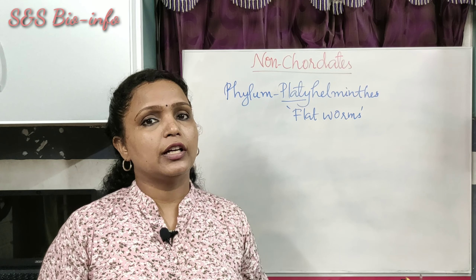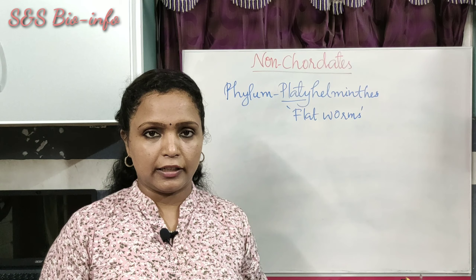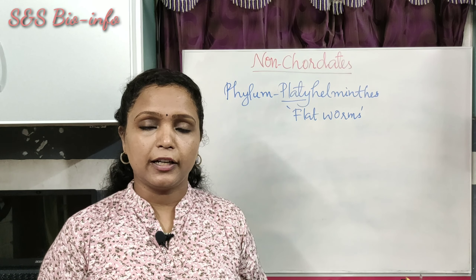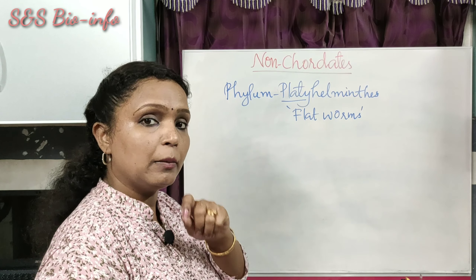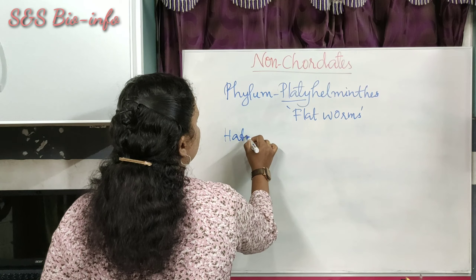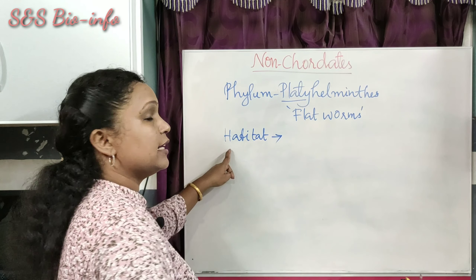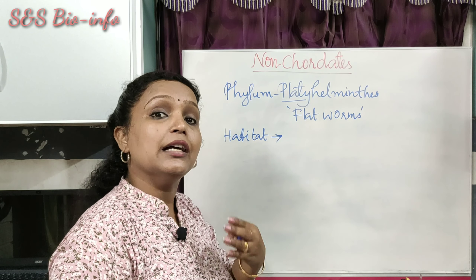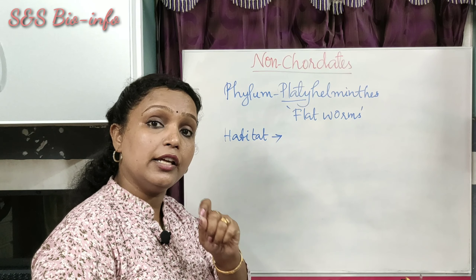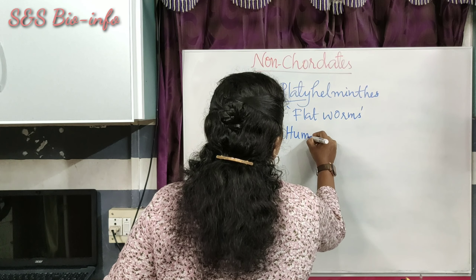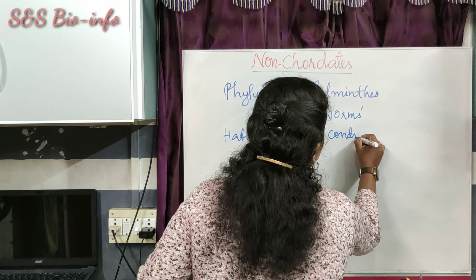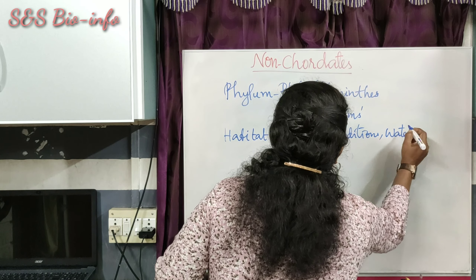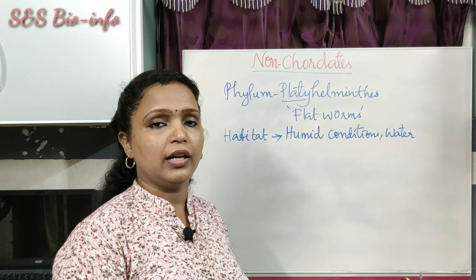Initially let's learn about the common fundamental features of the phylum, and later we will learn about the specific characteristic features of its members. The habitat of Platyhelminthes — the place where they live — includes water and also humid terrestrial conditions, especially in leaf litter. Some live in water and some live in humid terrestrial conditions.